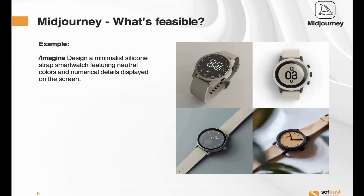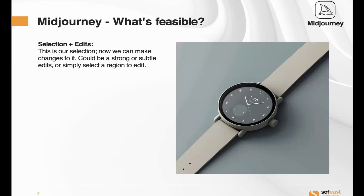Let's look at an example. We gave Midjourney the prompt: 'Design a minimalist silicon strap smartwatch featuring neutral colors and numerical details displayed on the screen.' This came from ChatGPT. Midjourney came up with four designs — you can see how they all have their similarities but are sticking to the brief. So we've already got four decisions to make, which is handy. We can make a selection of one of the designs and start to make some changes to it.